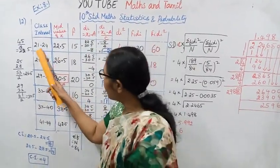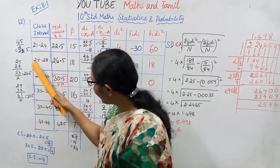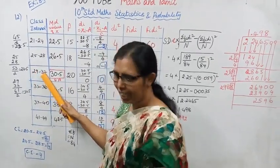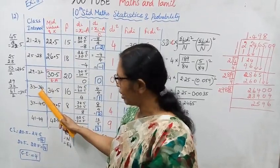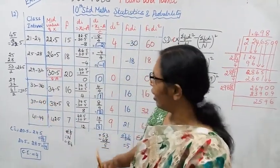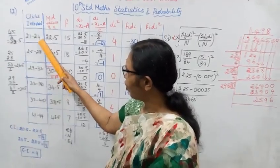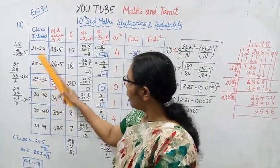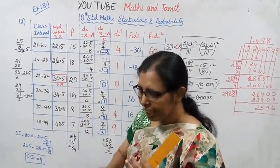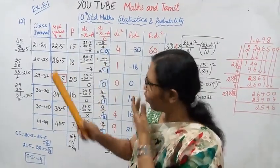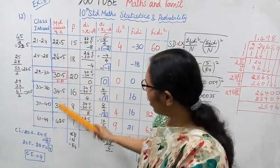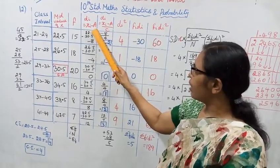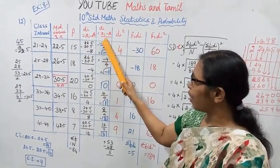We set up a table with the following columns: class interval, mid value xi, da equal to xi minus a, da equal to xi minus a by c (where c is the class interval width), da squared, fi times da, and fi times da squared.